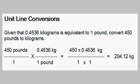In this unit we are going to look at unit line conversions. Given that 0.4536 kilograms is equal to 1 pound, convert 450 pounds to kilograms.